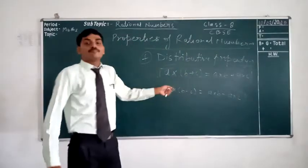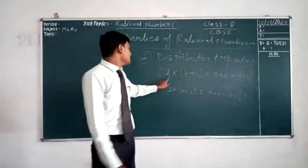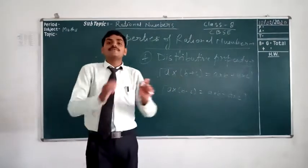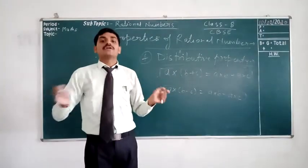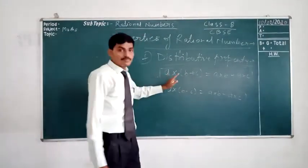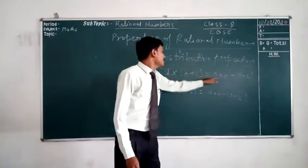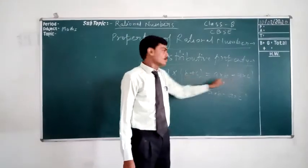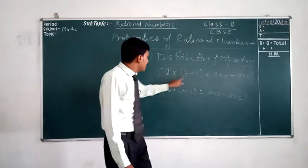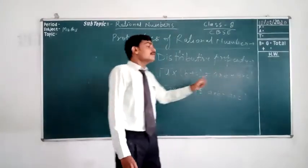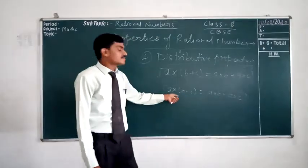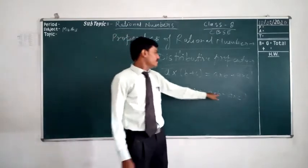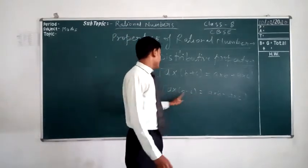If any number is present in this form, then we can expand it like this. First, multiply A into B. Here the sign is plus, so here will also be plus: A × B + A × C. And for subtraction also, A × B − A × C.